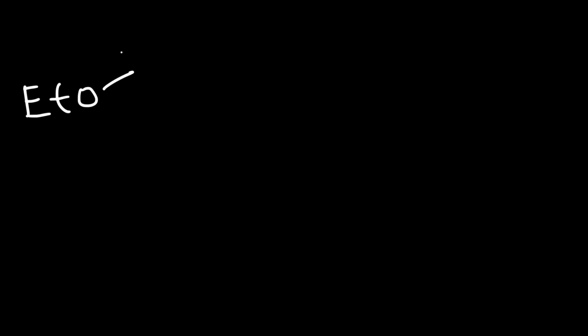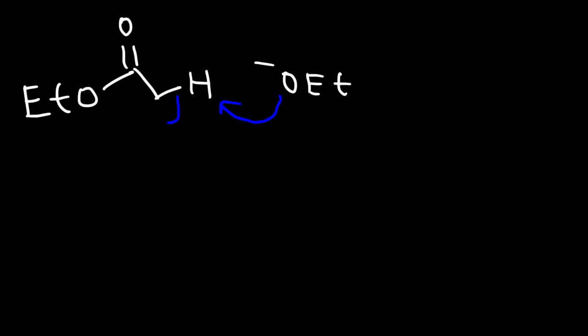In the first step, the base is going to remove the alpha hydrogen of the ester. So ethoxide is going to deprotonate the ester molecule, giving us an ester enolate ion.